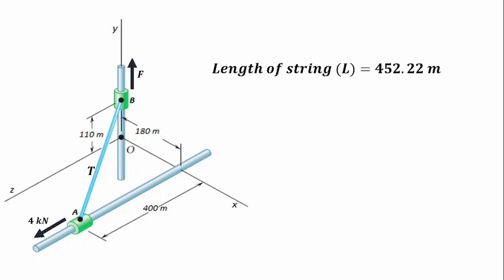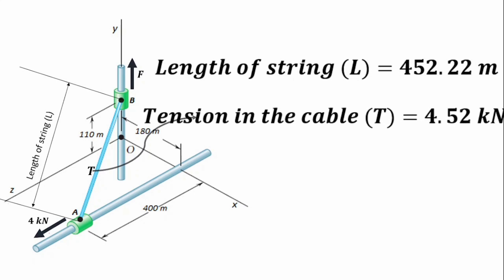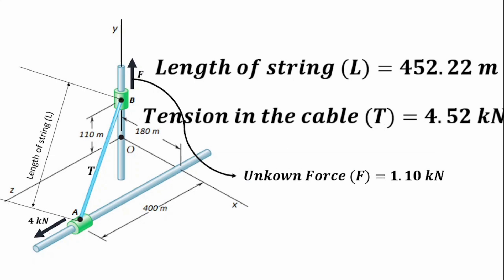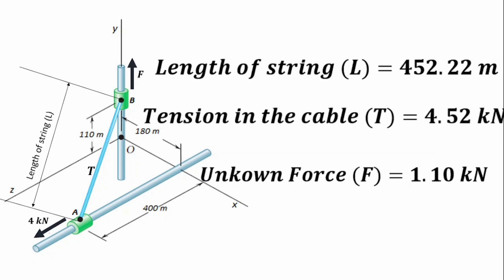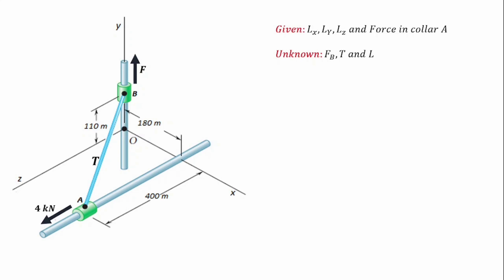Therefore, we've calculated our length of string L to be 452.22 meters, our tension T to be 4.52 kilonewtons, and our force F to be 1.10 kilonewtons. These are the three unknowns we were required to find. To conclude, for this problem we were given values for LX, LY, and LZ, which were the dimensions needed to calculate the unit vector of tension T, and the force in collar A to be 4 kilonewtons. Then we determined the force in collar B, tension T, and the length of the string.